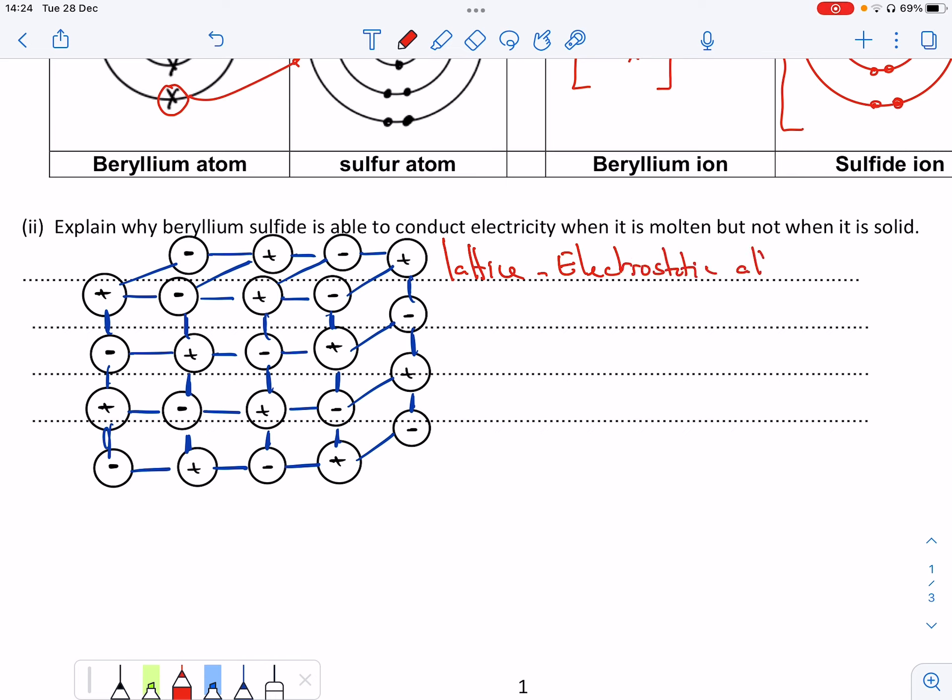hold the ions in place and therefore the ions cannot move. These ions are held in place by the electrostatic attraction. All that means is opposite charges attract and the ions cannot move.